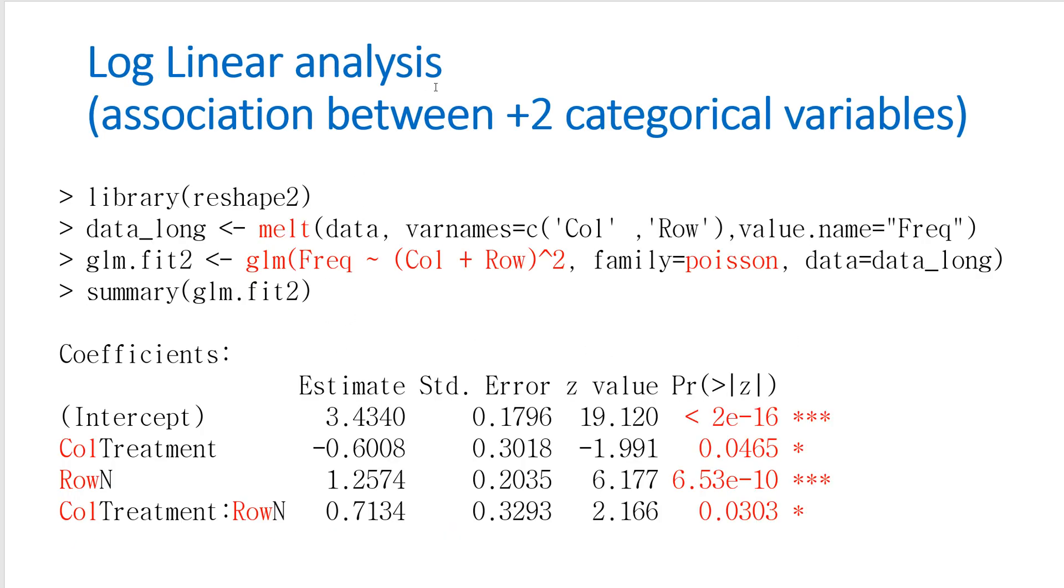And this row linear analysis is a general form of Chi-square test. In our program, you can use jrm function. Once you change data form by using melt function, then as you can see, a column, row, and association between column and row, it shows a significant p-value. So we can say that row and columns has a significant association.